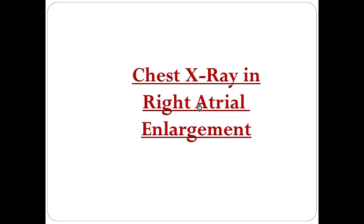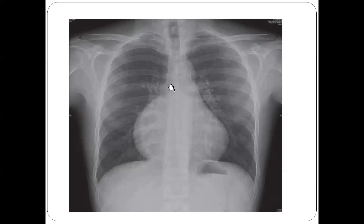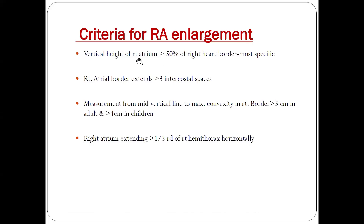Chest X-ray in right atrial enlargement. The criteria for right atrial enlargement on X-ray: first, if the vertical height of the right atrium is more than 50% of the right heart border, that is the most specific sign. As you can see here, this is the right heart border — the right atrium forms the right heart border — and since it is forming more than 50% of the right heart border, it is called right atrial enlargement.